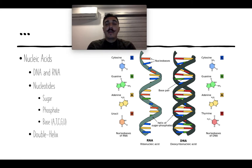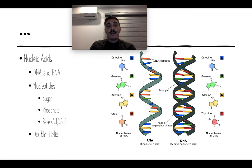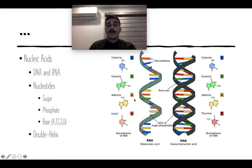Our last organic molecule is nucleic acids — basically our DNA or RNA. Nucleic acids are made up of nucleotides. Each nucleotide has a base, a sugar, and a phosphate on top. Many nucleotides make a DNA or RNA strand. The difference between DNA and RNA is that DNA uses deoxyribose sugar while RNA uses ribose. RNA also has a U base not found in DNA. DNA is a double helix, while RNA is a single strand.